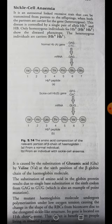It is an autosomal linked recessive trait that can be transmitted from parents to offspring when both partners are carriers for the gene — both need to be at least heterozygous carriers. This disease is controlled by a single pair of alleles. The gene responsible is called HbA, and for a normal person the allele is HbA. The gene defect affects the forming of RBCs.